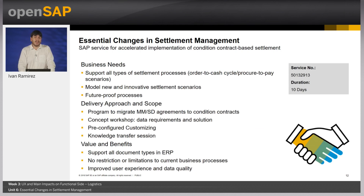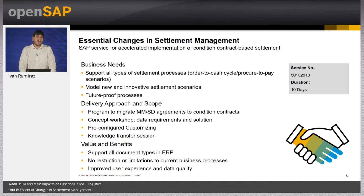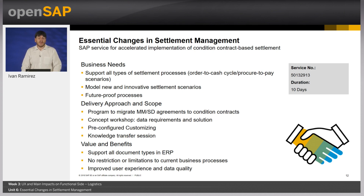SAP offers a service for accelerated implementation of condition contract management. This service supports all types of settlement processes such as rebate settlement, and enables modeling of new and innovative subsequent settlement scenarios and future-proof processes as is already the standard in S/4HANA. The delivery approach and scope includes a program to migrate MM or SD agreements to condition contracts, a concept workshop covering data requirements and solution, pre-configured customizing delivered with the service to support direct utilization, and a knowledge transfer session to IT and users. The value and benefits include support for all document types in ERP such as purchase orders, invoice, goods receipt, point of sale data, shipping and agency documents, no restriction or limitation to current business processes, and improved user experience and data quality through harmonization and consolidation.